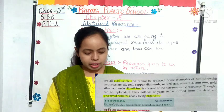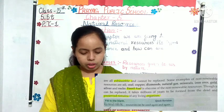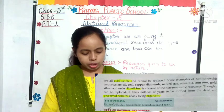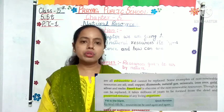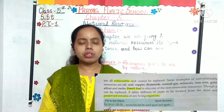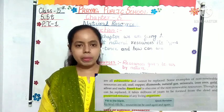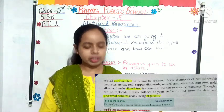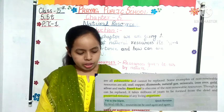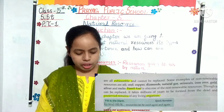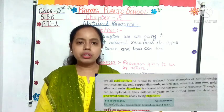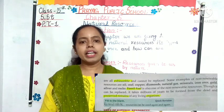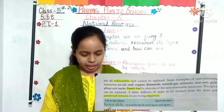Some examples of non-renewable resources are: oil, coal, copper, diamond, natural gas, minerals, iron ore, gold, silver, and rocks. Fossil fuel is also one of the non-renewable resources. Students, fossil fuel — which we call Jivashm Indhan in Hindi — is also an example of a non-renewable resource.